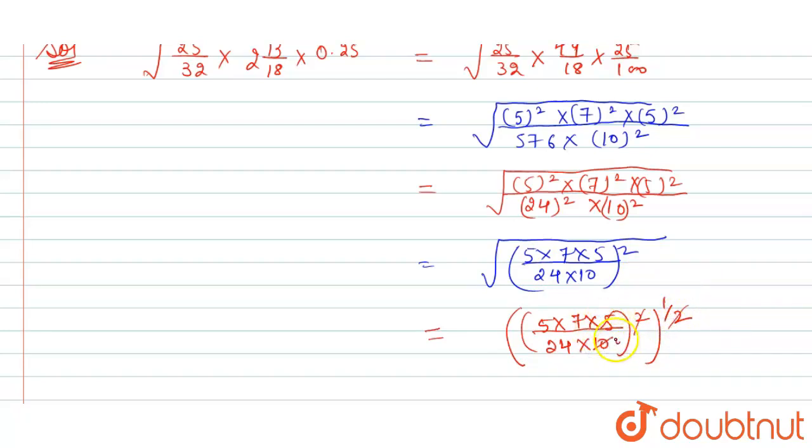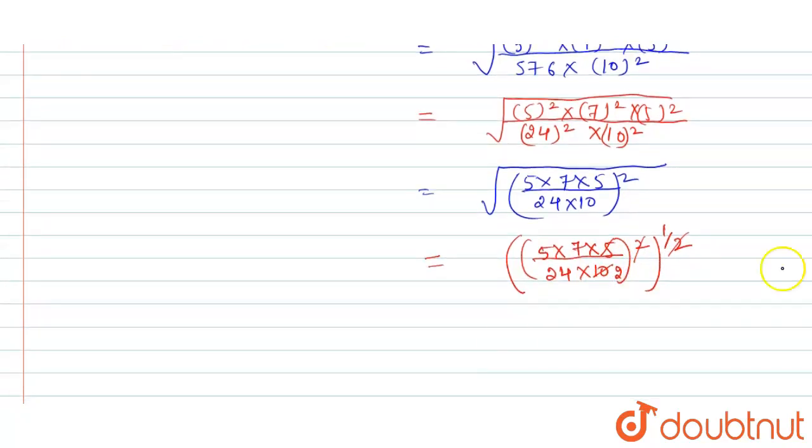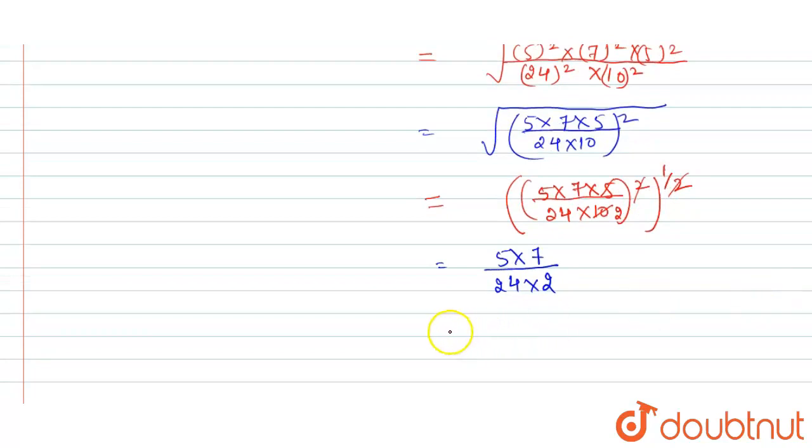Now the remaining part is 5 times 7 divided by 24 times 2, and we know that 5 times 7 is 35 and 24 times 2 is 48, so this is our answer: 35/48. Thank you.